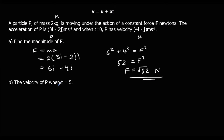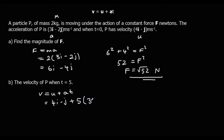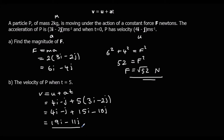Find the velocity when t equals 5. So we're going to do v equals u plus at. u is 4i minus j, plus 5 times a, which is 3i minus 2j. So v equals u plus at — expand the bracket: 15i minus 10j, and simplify: 19i minus 11j. And that is in meters per second.